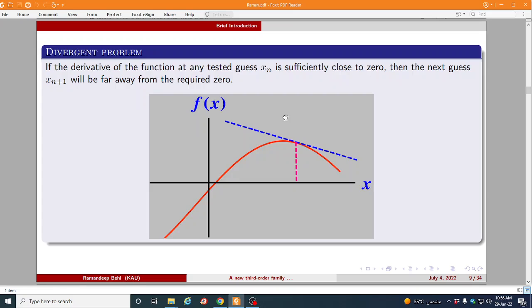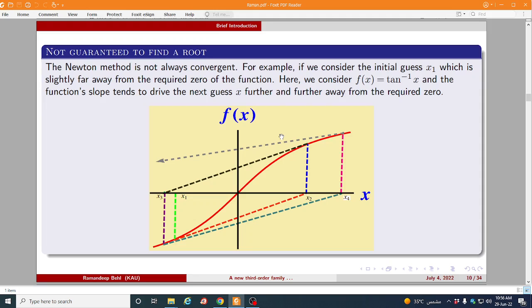Then divergence problem: let us say you choose initial guess close to the required root but still in some cases it will diverge as you can see in this picture. The next is not guaranteed to find a route. All iterative methods they have these problems also.